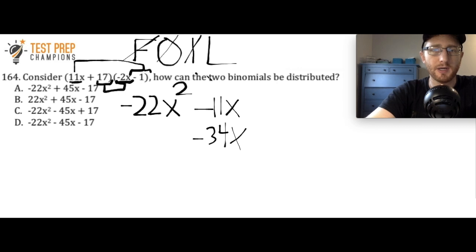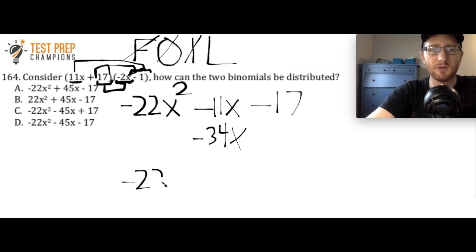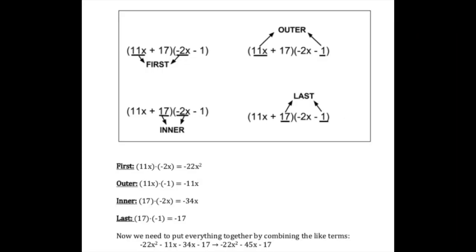For the Last step, multiply the last terms: 17 times negative 1 equals minus 17. Now combining the x terms: negative 11x plus negative 34x equals negative 45x. So the final answer is negative 22x squared minus 45x minus 17. If any part was confusing, let me know in the comments. Pause the video to study the written solution if you'd like.